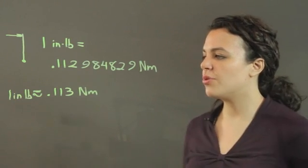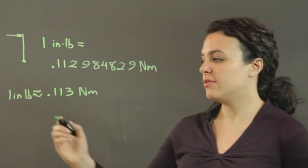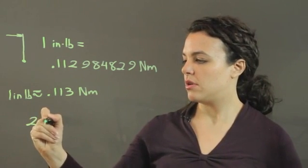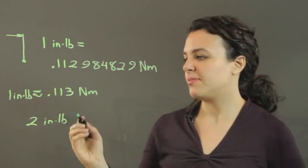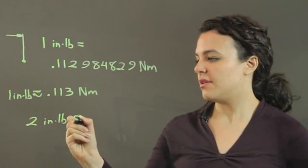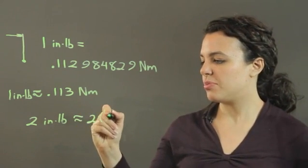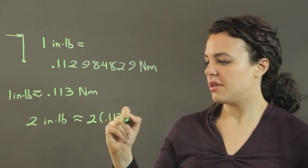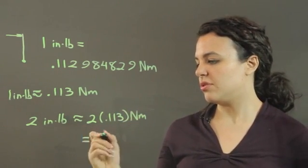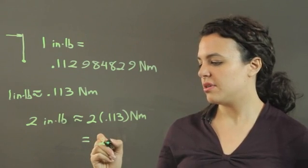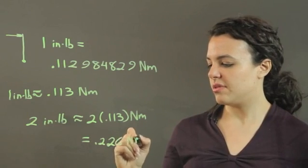So if I had 2 inch-pounds, they're about equal to 2 times 0.113 Newton-meters, which equals 0.226 Newton-meters.